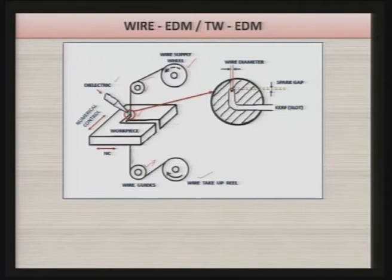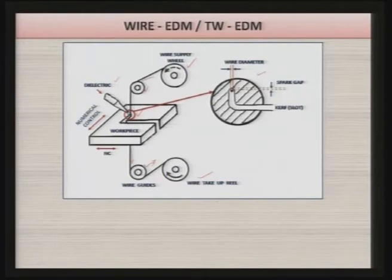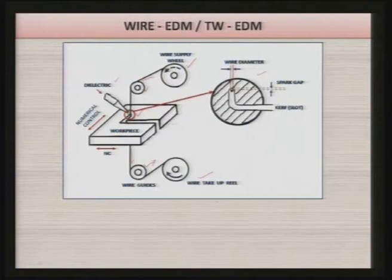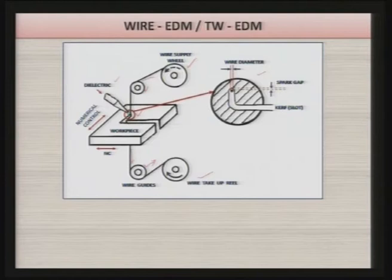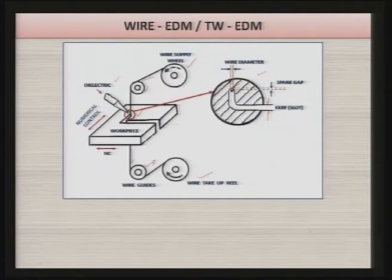Looking at the enlarged view of the material removal area, a kerf is being produced whose width depends on the wire diameter — it is slightly larger than the wire diameter. This enlarged size of the kerf compared to the wire diameter is known as overcut. The gap between the workpiece and the wire outer periphery is known as the sparking gap or inter-electrode gap, and the slot formed is known as the kerf.